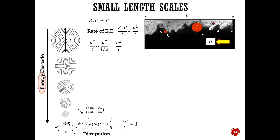At very small scales in turbulent flow, the quantity zeta times eta divided by nu represents a Reynolds number — velocity times length divided by kinematic viscosity. At the small scale it's reasonable to assume this Reynolds number equals one.